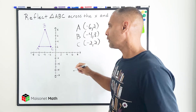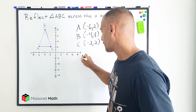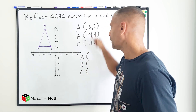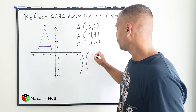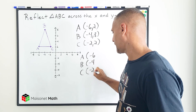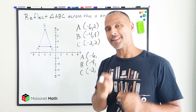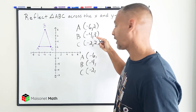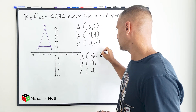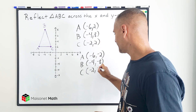All right, so let's reflect this across the x-axis. When reflecting something across the x-axis, all of the x values of your original points are going to remain the same. So we're going to rewrite these x values as negative 6, negative 4, and negative 2. And your y values become opposite of what they are. So all of these positive values are now going to be negative. So positive 2 is now negative 2, positive 8 is now negative 8, and positive 2 is now negative 2.